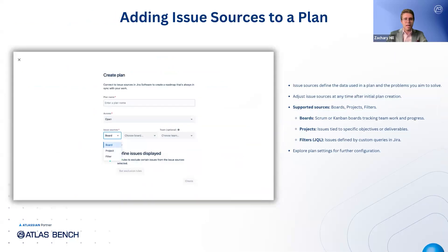When creating or refining a plan, you start by choosing where your data will come from — these are called issue sources. By defining the issue sources, you're essentially selecting the set of issues that will guide your planning efforts. You can pick boards, projects, or filters. Boards, whether Scrum or Kanban, map out team workloads and progress. Projects focus on a specific product or feature, making it easy to visualize related work. And filters, driven by JIRA's powerful query language JQL, let you build a custom set of issues based on any criteria you choose.